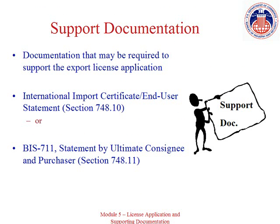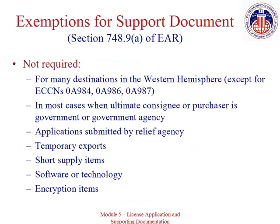Exporters may be required to obtain documentation from the ultimate consignee which supports the facts stated on the license application. The document required will be either an international import certificate or end user statement, or the statement by ultimate consignee and purchaser. These documents are representations from the government of the importing country or from the ultimate consignee and/or purchaser regarding the final disposition of the exported items. While most license applications require one of the support documents, there are certain exemptions that apply to all support documentation requirements. Note that unless specifically required by the EAR or requested by a licensing officer, the support document is not sent to BIS but kept in the exporter's files.